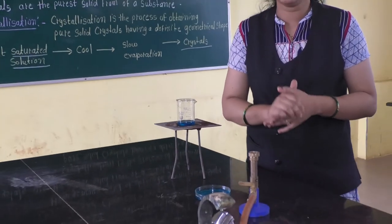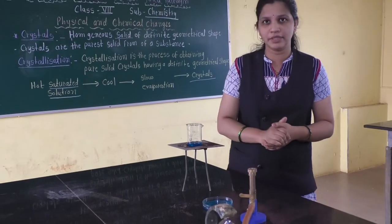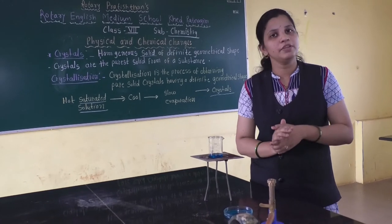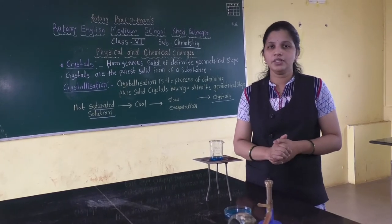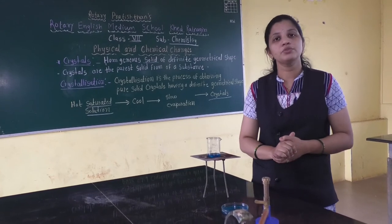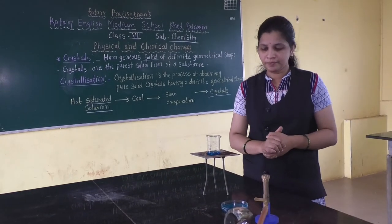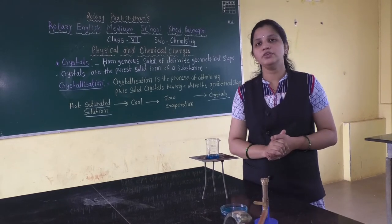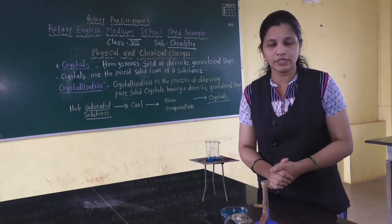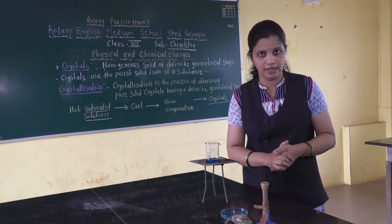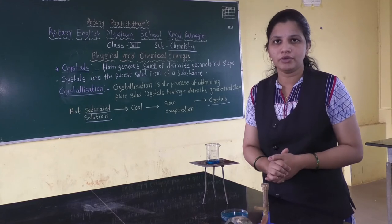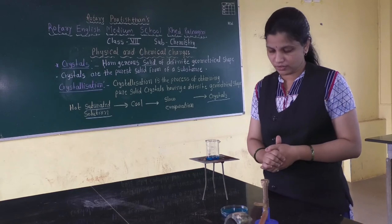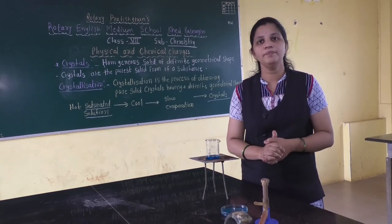In this whole lesson we discussed physical and chemical changes, their examples, and the difference between them. We have learnt galvanization and crystallization, so today this lesson is completed. For homework, this activity is given in your textbook — write the whole activity, procedure as well as diagram, and write your observation in your chemistry notebook. Tomorrow's period we will see our question and answers. So today we will stop here. Thank you.